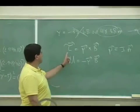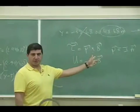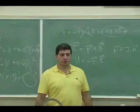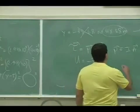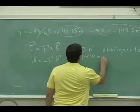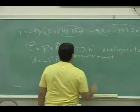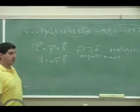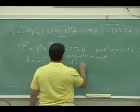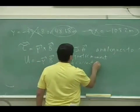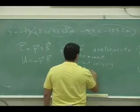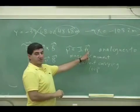In chapter 29, torque is mu crossed into B, where mu is defined as the current in a loop times the area of the loop. This is called the magnetic moment — the magnetic moment of a current-carrying loop.